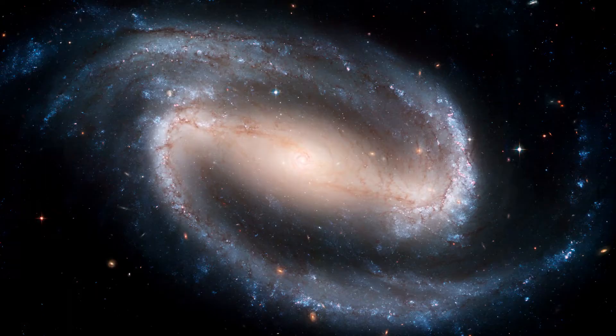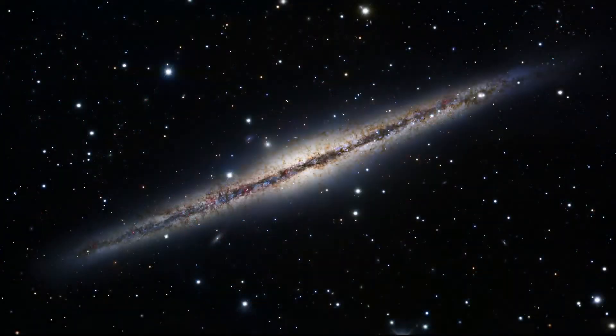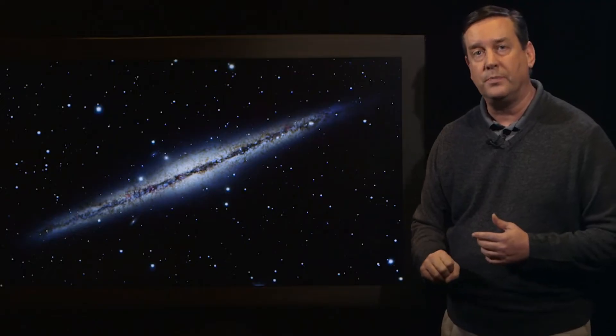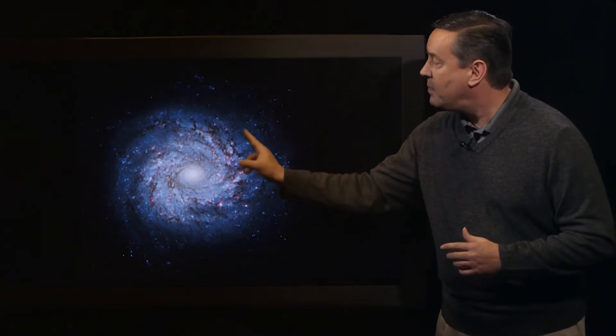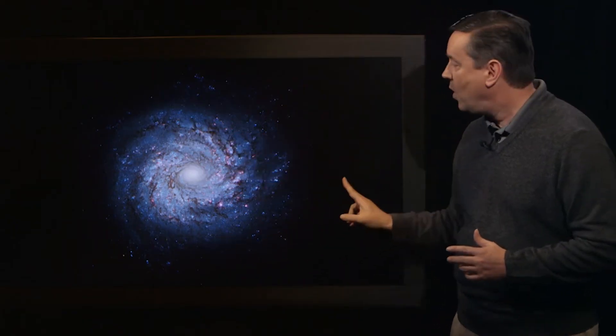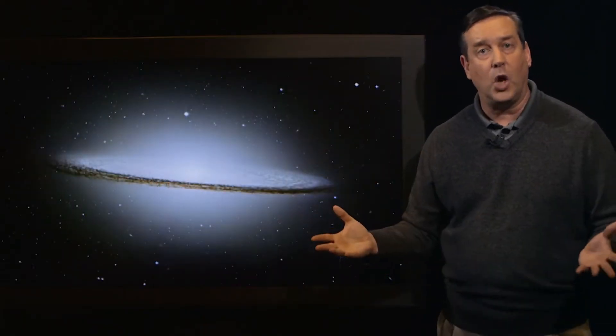All of these spiral arms are within a thin disk, resembling the shape of a pancake. In the center of the disk is a rounded bulge of stars. Some bulges of stars are very small compared to the size of their disk, while others are quite large.